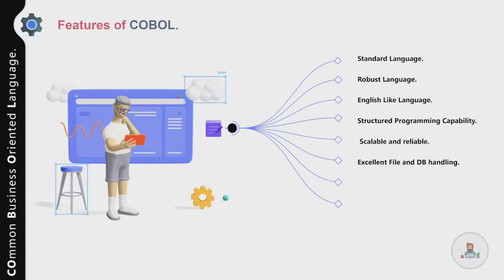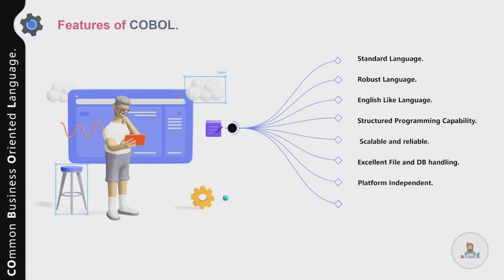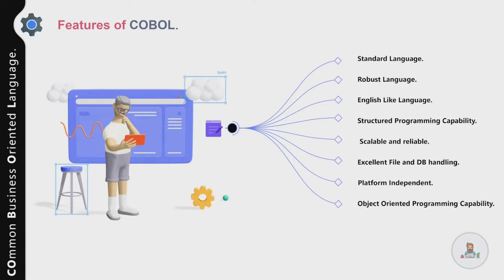COBOL is scalable, reliable, and has excellent file and database handling capabilities. COBOL can handle huge volumes of transactions, and due to this, COBOL still handles more than 70 percent of world business transactions. It is suitable for everything from simple batch reporting to complex banking transactions. COBOL is platform-independent and supports object-oriented programming, meaning you can write business logic in the form of classes and use those classes in your program.